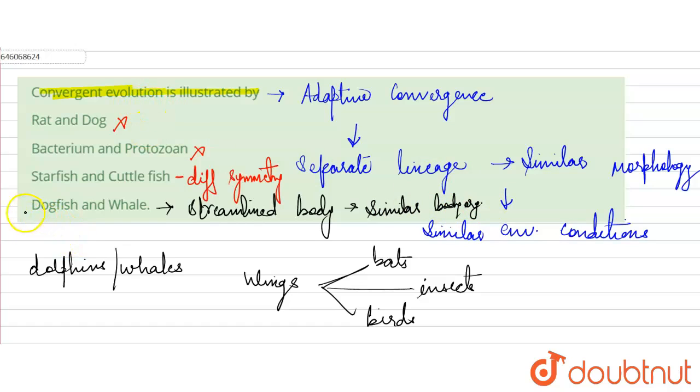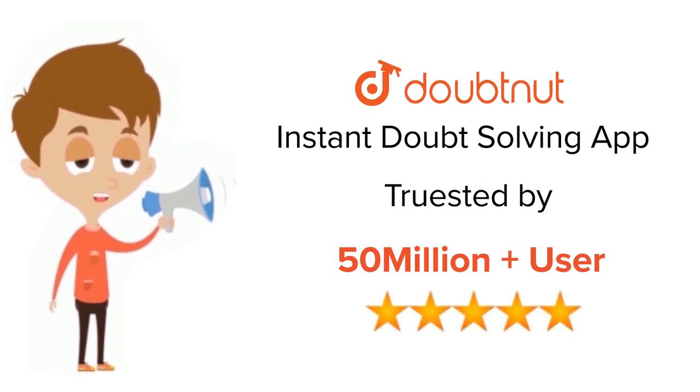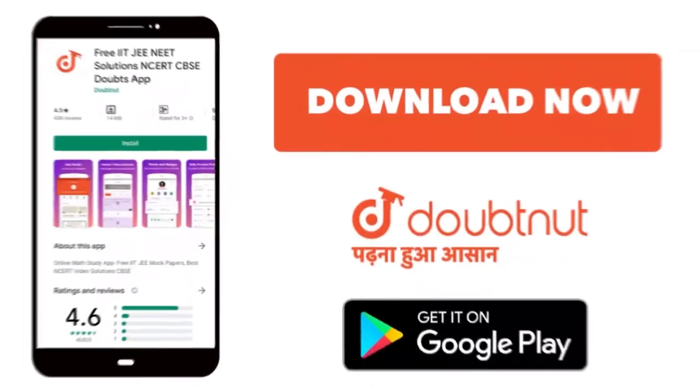That is, option D will be the correct answer. Thank you. For class 6th to 12th, IIT-JEE and NEET level, trusted by more than 5 crore students. Download Doubtnet app today.